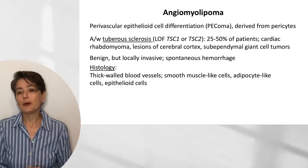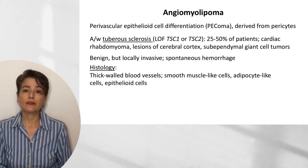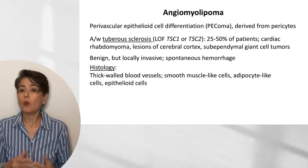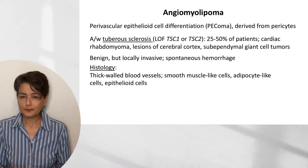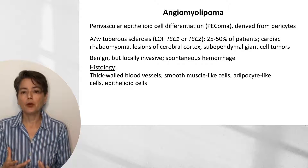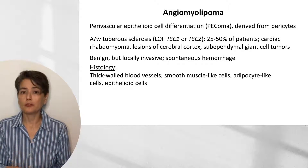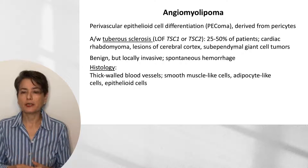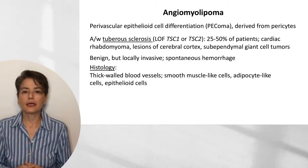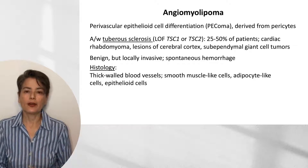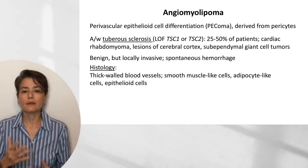The angiomyolipoma is benign but may be locally invasive and can undergo spontaneous hemorrhage, because it is composed of thick-walled poorly formed blood vessels (the 'angio' component), smooth muscle cells (the 'myo' component), and adipocyte-like cells (the 'lipoma' component). There can also be scattered epithelioid cells — hence the name.